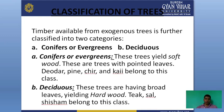Timber available from exogenous trees is further classified into two categories: conifers or evergreen, and deciduous. Conifers are trees that remain green throughout, while deciduous trees shed their leaves or branches at certain times.